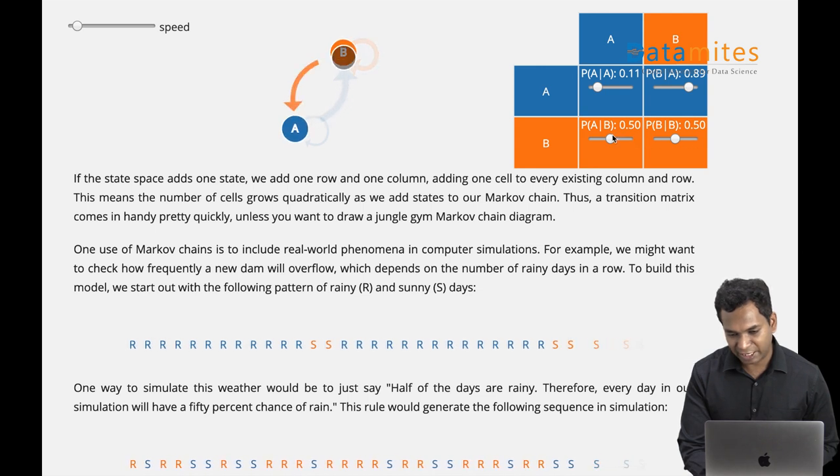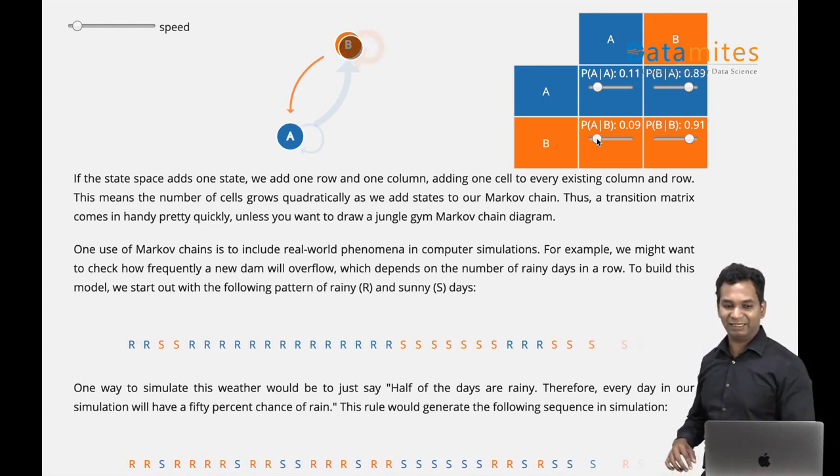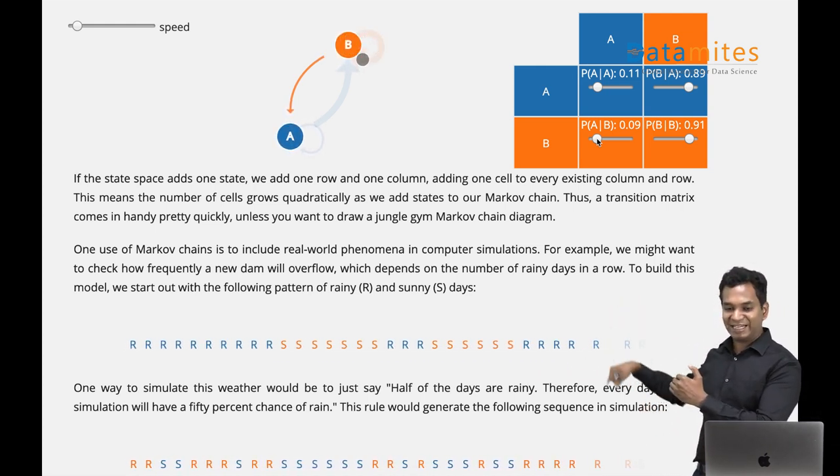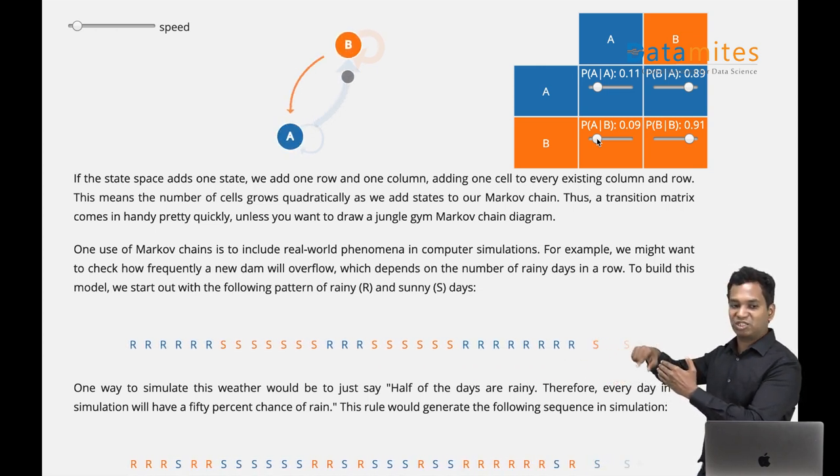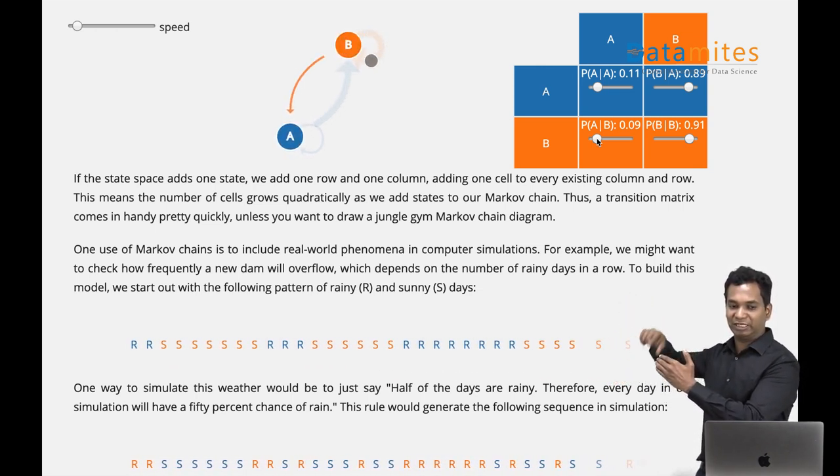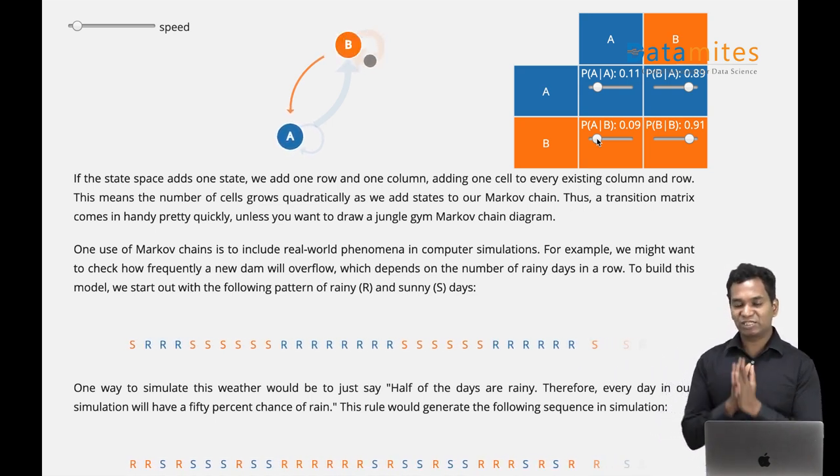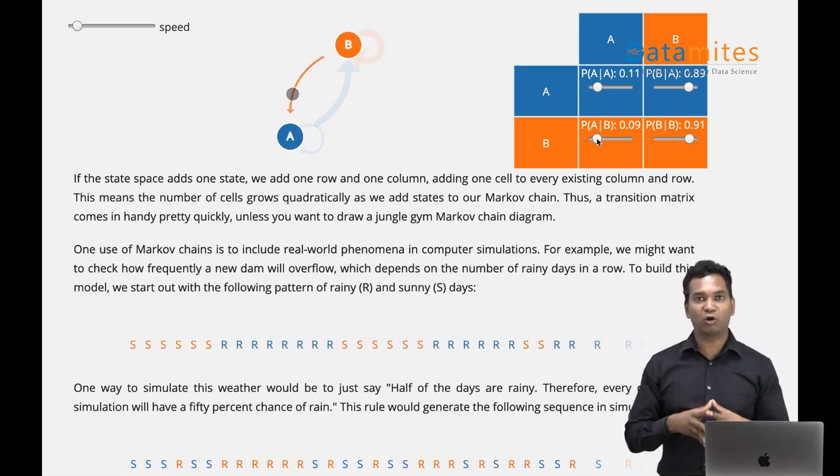If I do B to B, you'll see that if it goes to B, the chances of staying in B is 90%, so it always tries to stay in B. It doesn't really come to A most often. So you can play with this transition. This is called a Markov decision table or Markov table, and this principle is called Markov chain.